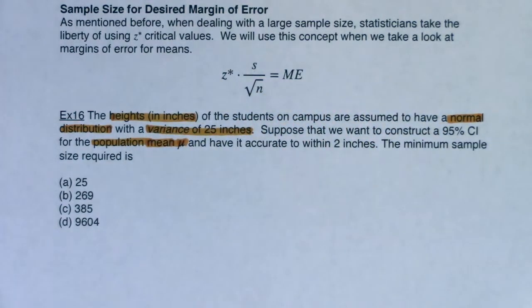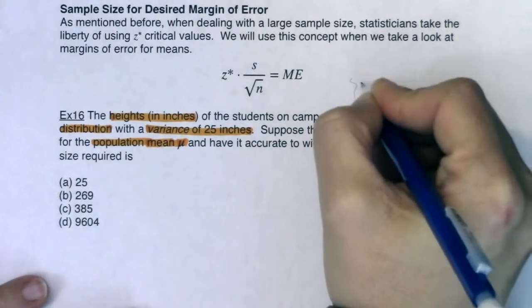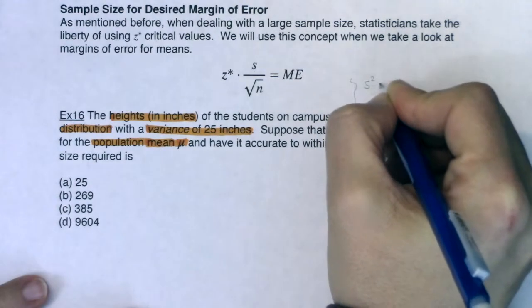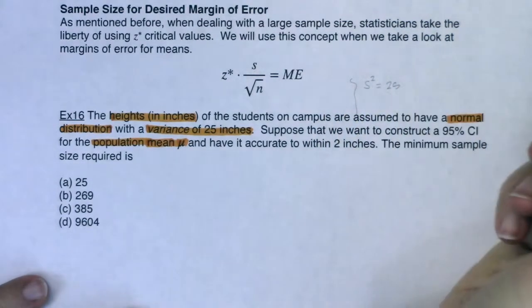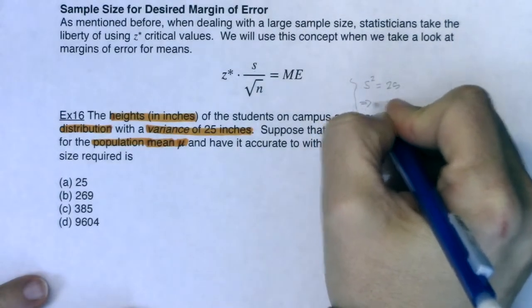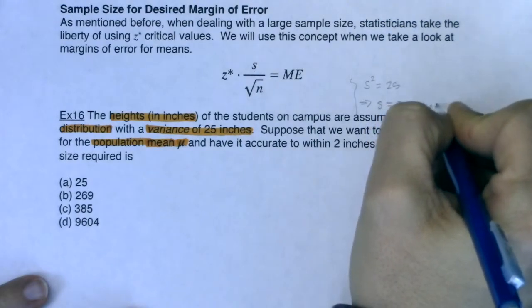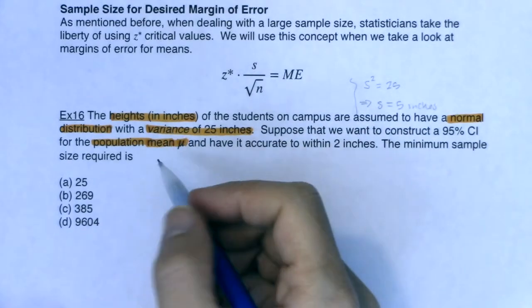The other thing I saw that was interesting was variance of 25 inches. Now it's been a little while since we've dealt with variance. We picked that vocab term up in chapter two. If you remember, variance is s squared. So if we've got a variance of 25 inches, then the sample standard deviation is actually five inches. So that's why I put it in italics.